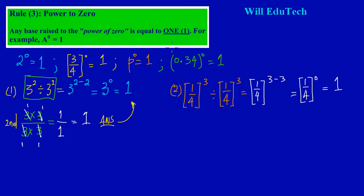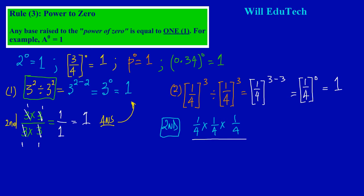Using a second method: one upon four cubed means one upon four multiplied by itself three times. We divide using a horizontal line — called the vinculum — by one upon four multiplied by itself three times also.